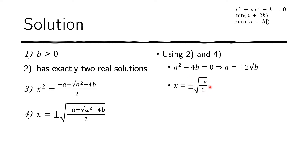Furthermore, A must be negative. If A were zero, then x equals zero, giving only one solution — a violation. If A were positive, then negative A is negative, and we'd be taking the square root of a negative number, giving complex solutions — again a violation. So A can only be negative, and therefore A equals negative 2 times the square root of B.